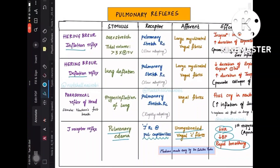Hering-Breuer inflation reflex occurs when there is over-inflation of the lung. The stimulus is tidal volume greater than three times normal — greater than 1500 ml (normal tidal volume is 500 ml). This overstretches the lung. The receptors are slow-adapting pulmonary stretch receptors, and the afferent is large myelinated vagal fibers.